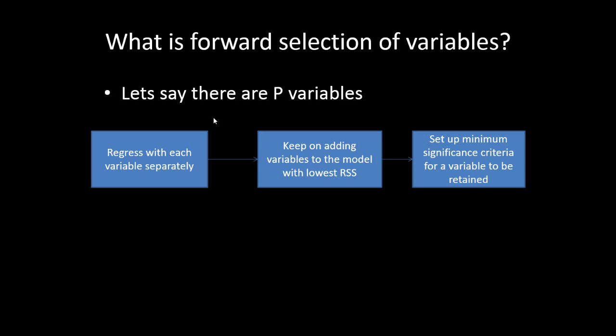We always expect that the residual sum of squares should be minimum. So if for a variable it is minimum, then it is the best variable — it actually explains the variation in the dependent variable. We arrange the p independent variables with respect to the residual sum of squares, and the one which has the least RSS is picked first and used in the model.